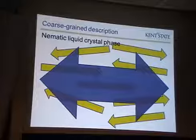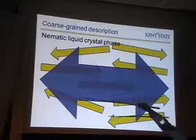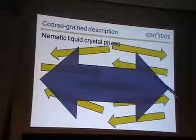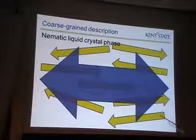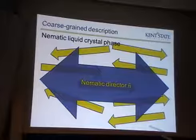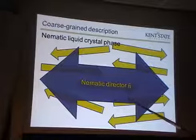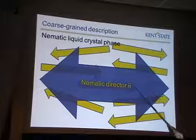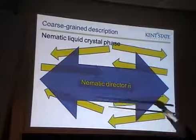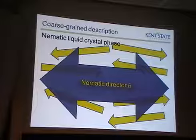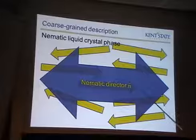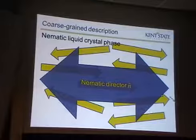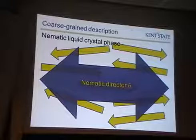Since they are approximately half-pointing this way and half-pointing that way, we can represent the whole orientational distribution by a big double-headed arrow. That picks out the axis in space. This axis is what's called the nematic director, represented by a unit vector n-hat. You'll notice that we could equally well pick n-hat as a vector pointing this way, or negative n-hat pointing the other way — those are two equivalent ways of representing the same orientational distribution function.